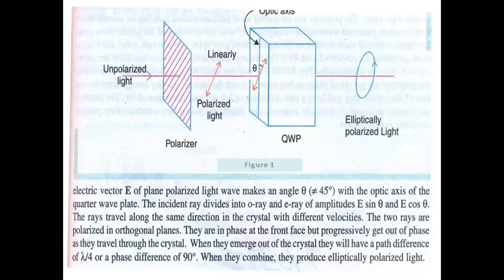When the incident ray enters the quarter wave plate, it splits into two components — the E-ray and O-ray — with amplitudes E·sinθ and E·cosθ. They travel in the same direction inside the crystal but with different velocities, polarized in orthogonal planes. They are in phase at the front face of the quarter wave plate, but as they proceed inside the crystal, they slowly get out of phase. When they reach the end face, they will have a phase difference of 90 degrees, or a path difference of λ/4.